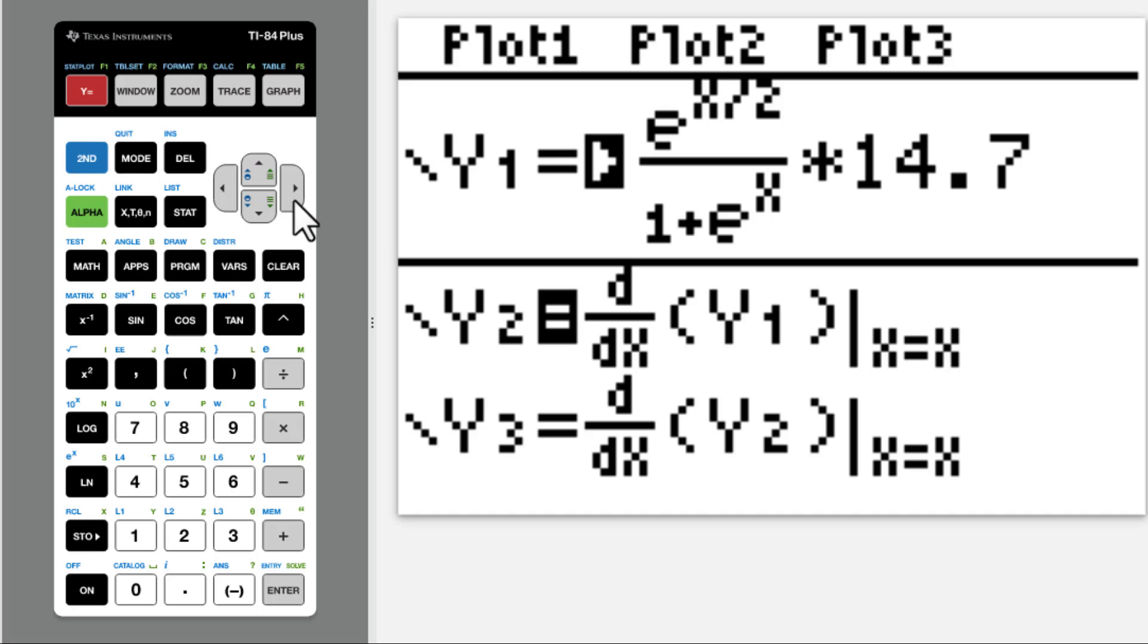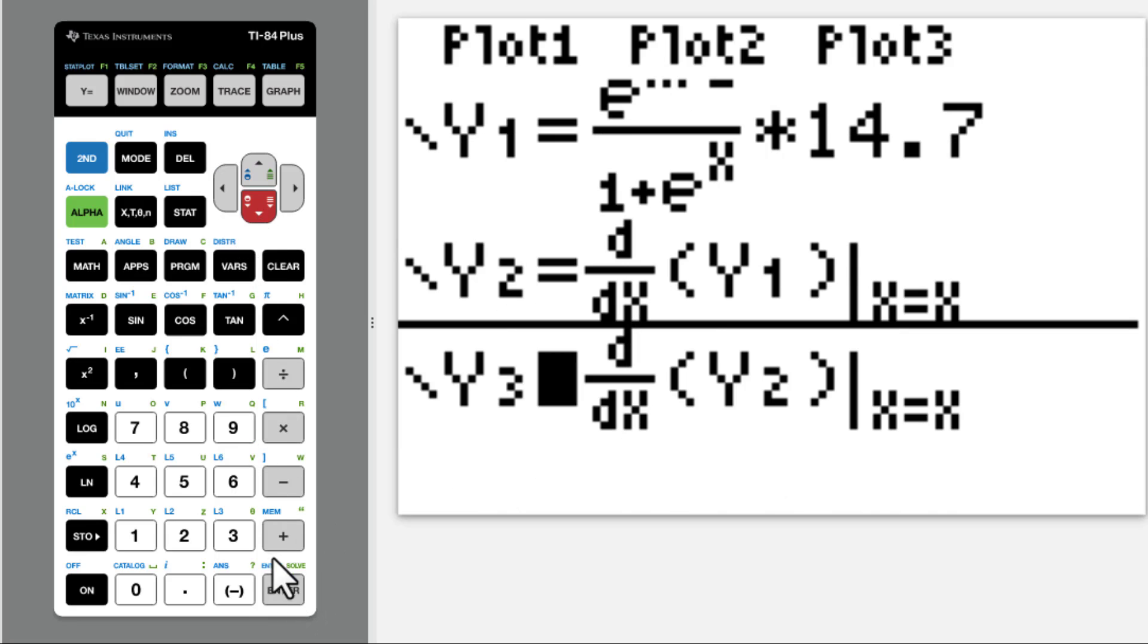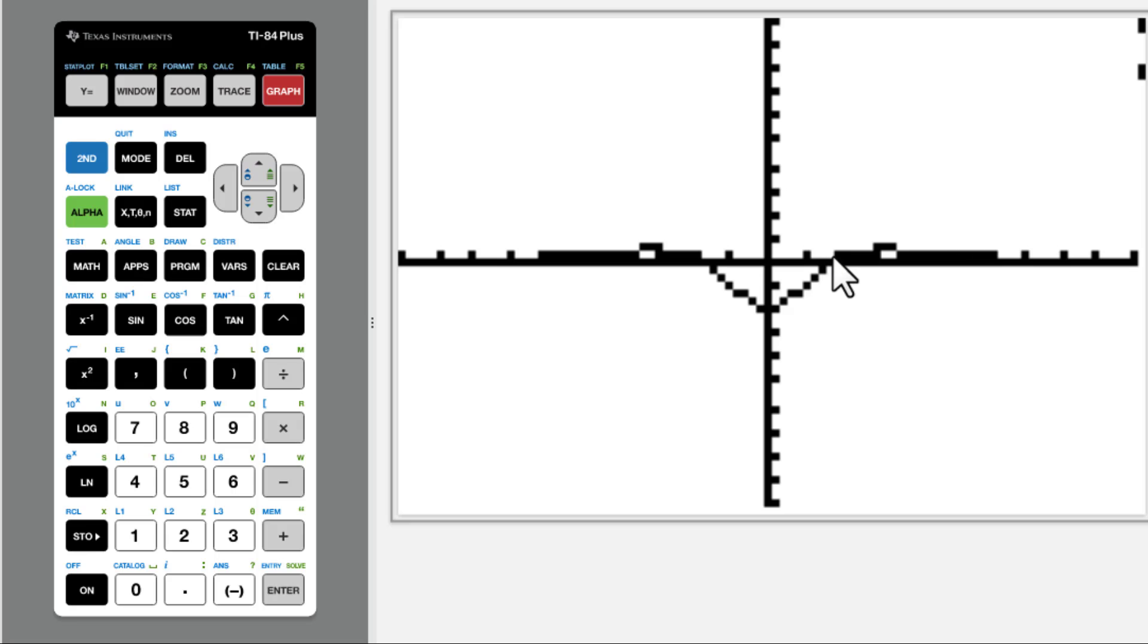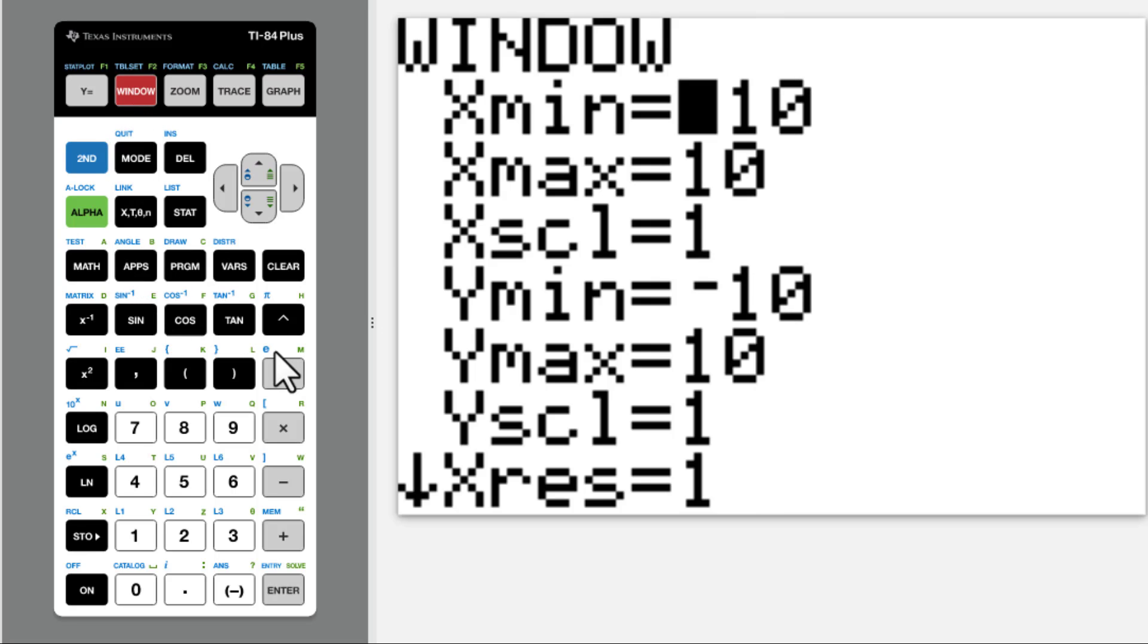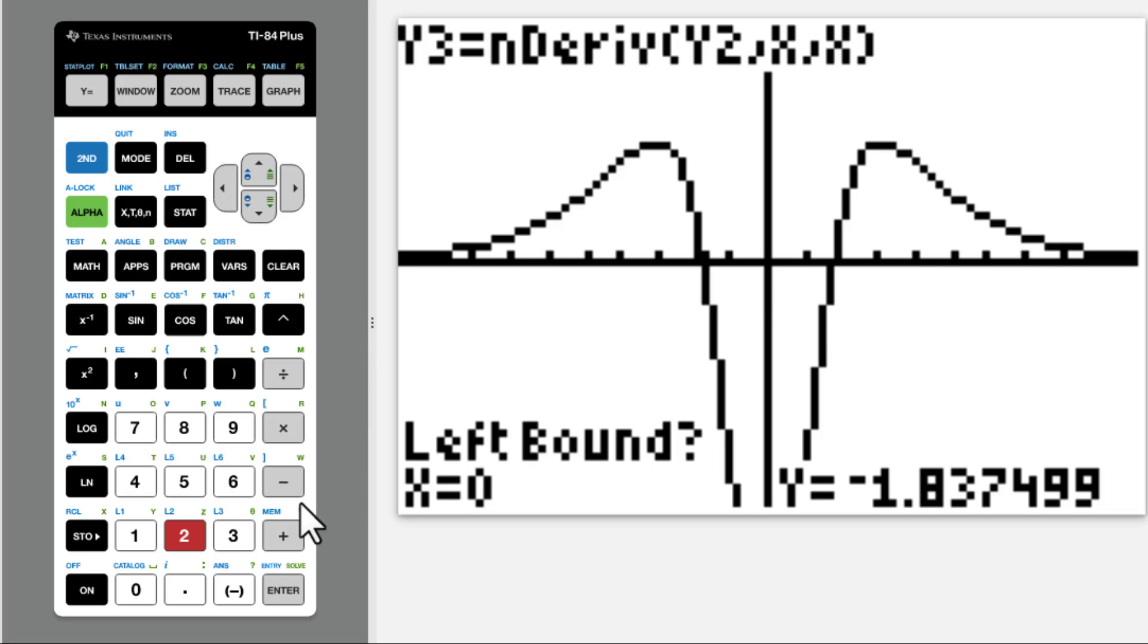If you want to use the second derivative function, let's unhighlight y2, then highlight y3. Graph. For the second derivative function, we are looking for the x-intercept. Change the window. We only change the minimum from negative 1 to 1. Then graph again. This time we can see this zero very clearly. Second trace, go to 2. Left bound, let's do 1, enter.